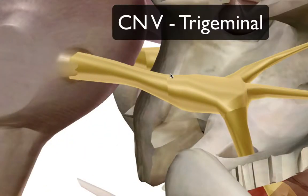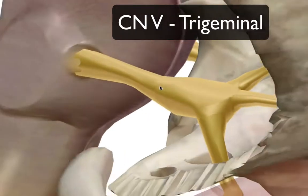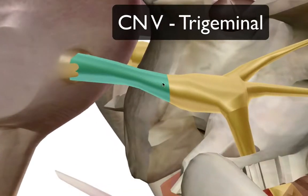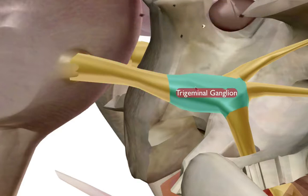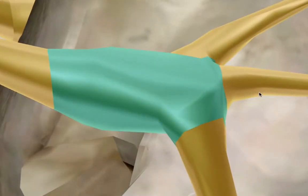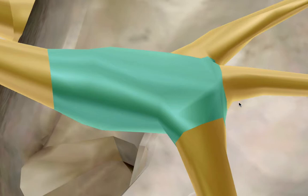Cranial nerve number five is the trigeminal nerve. Its origin is in the lateral aspect of the pons. The nerve fibers protrude out to the trigeminal ganglion — the processing center for the three branches. Note that the 'tri' prefix refers to its three branches, not to it being the third cranial nerve. The trigeminal ganglion can also be a site of dormant viruses.